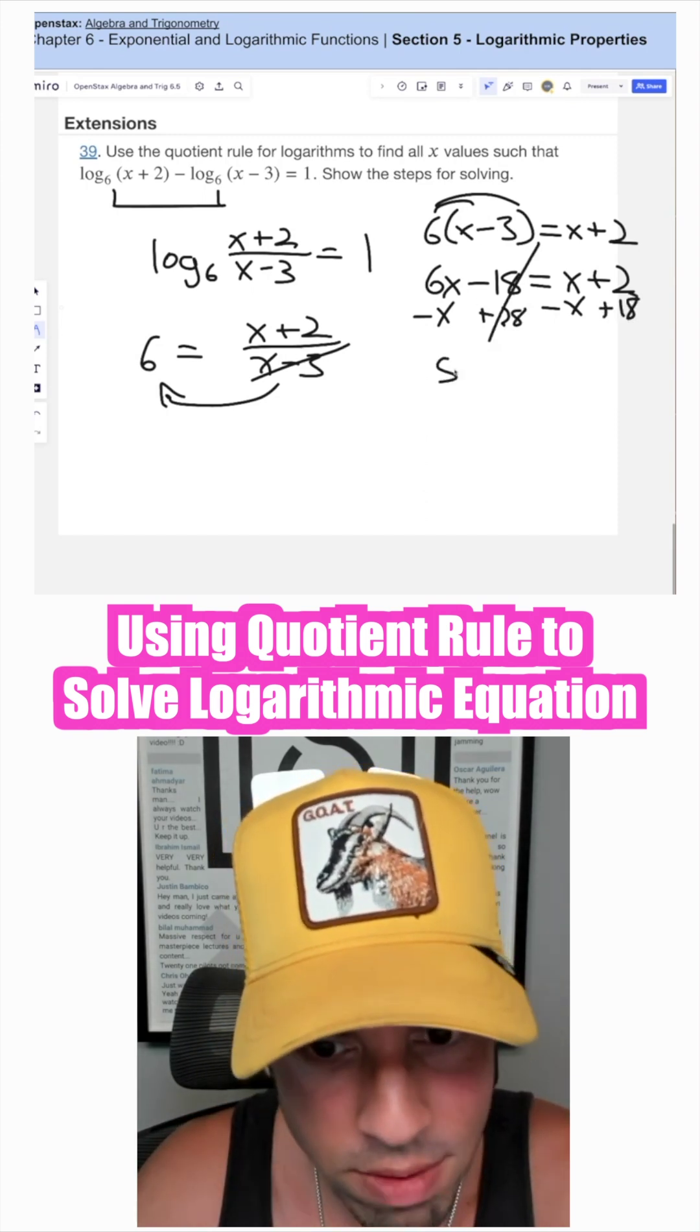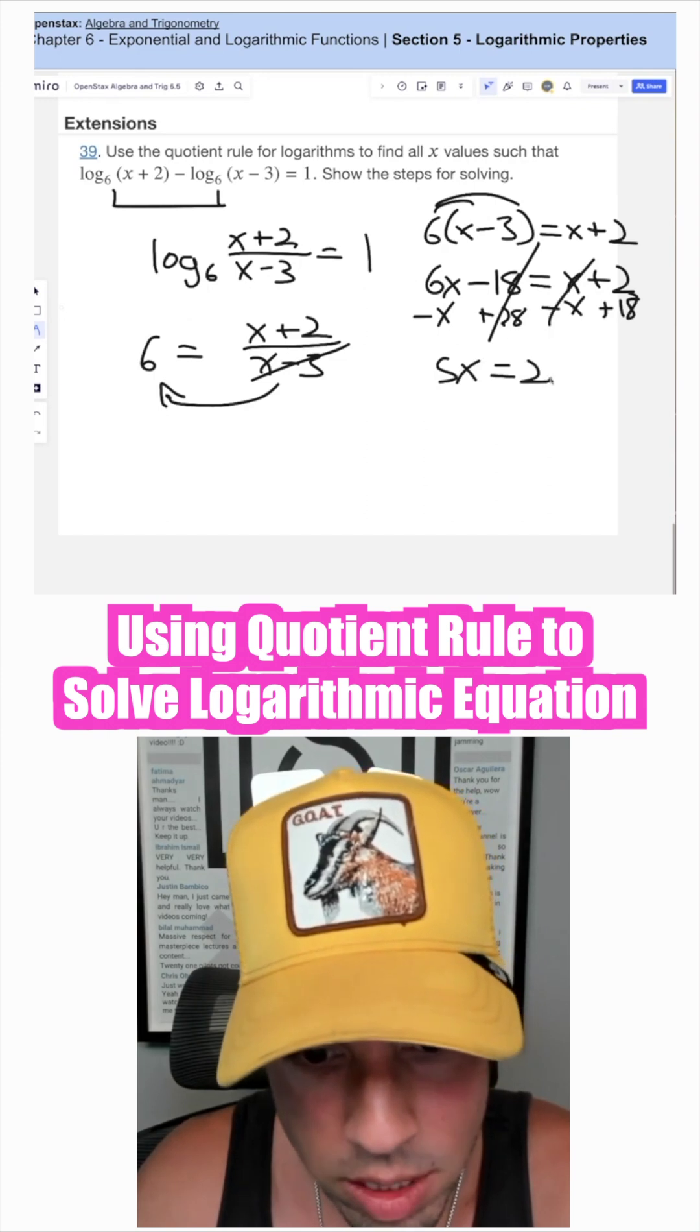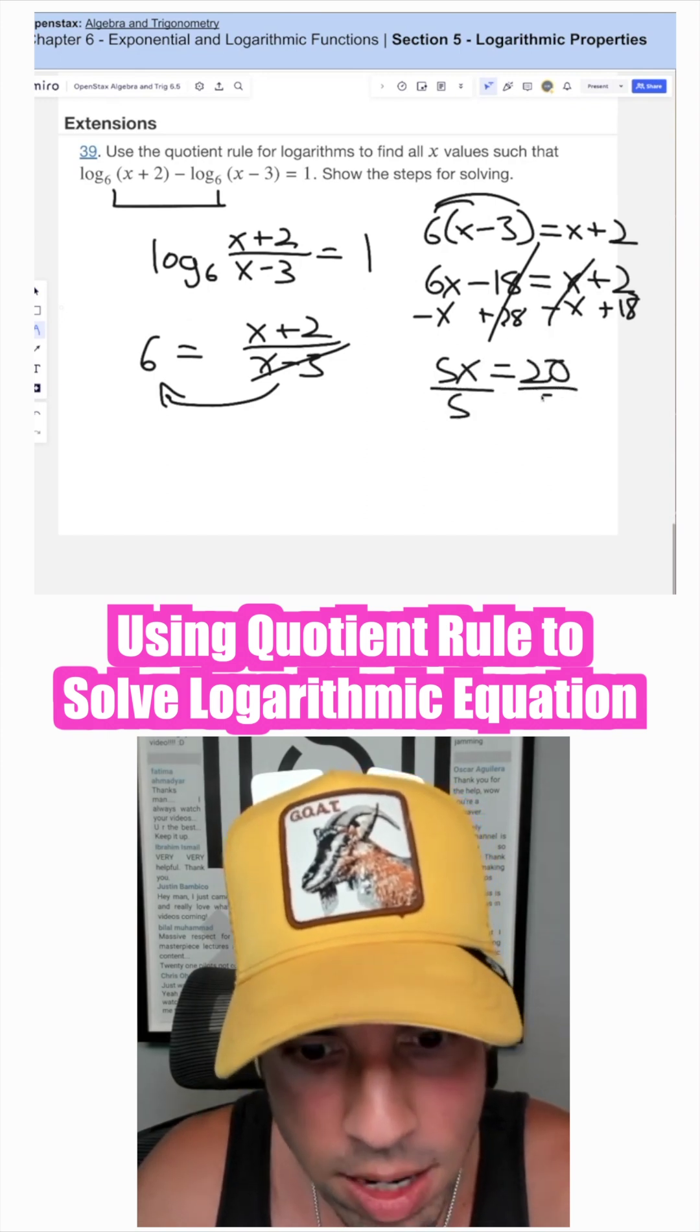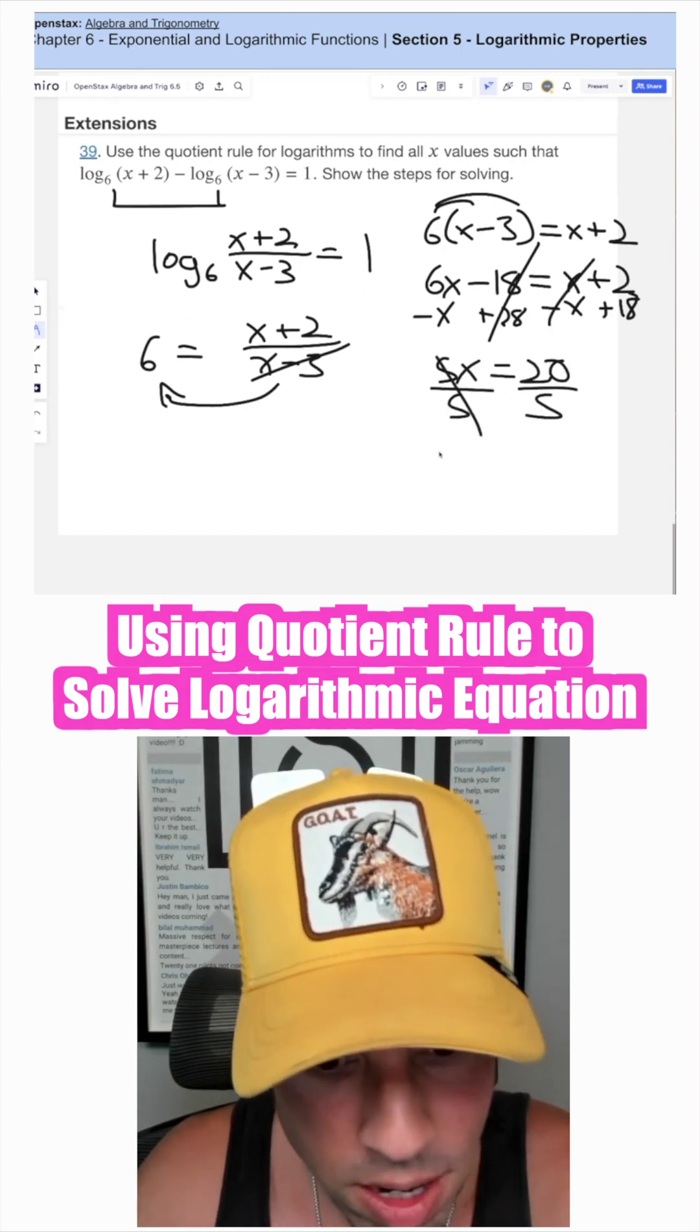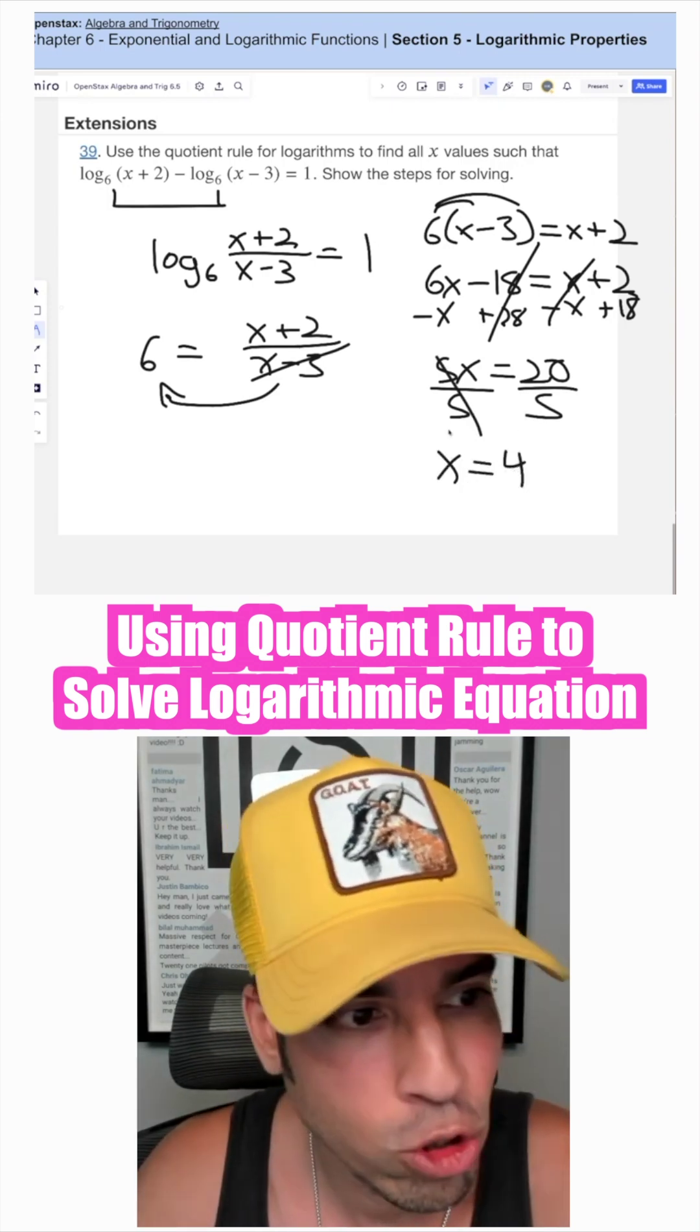Divide both sides by five and I get 20 divided by five, which is x equals four. Now just to be safe, you should plug and chug and make sure this indeed verifies.